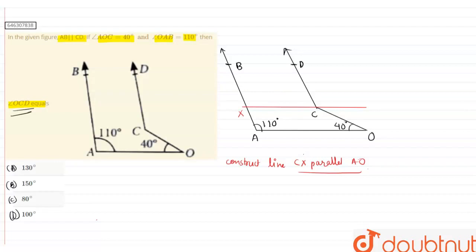since AB is parallel to CD, this angle 110 will be equal to this angle BXC. This is simple parallel lines logic.